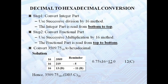Consider the example: convert the decimal number to hexadecimal. For the integer part 3509, divide by 16: quotient 219, remainder 5. Then divide 219 by 16: quotient 13, remainder 11. In hexadecimal, 13 is equivalent to D and 11 is equivalent to B. Reading from bottom to top gives D, B, 5.